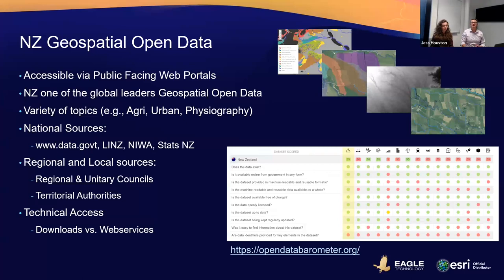How you access this data can be done in two key ways. One is to download data from the website — you can download GIS data onto your computer and use it there. But increasingly, and probably more sustainably, you can access it via a web service — you can connect your map on your computer to the source of information and get a live feed of it, which is really powerful.